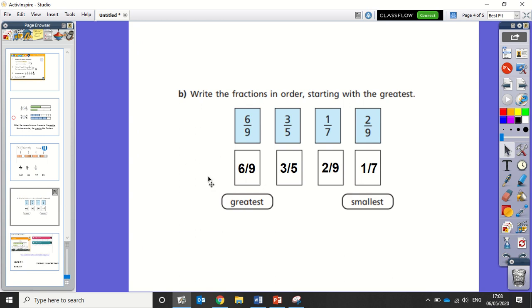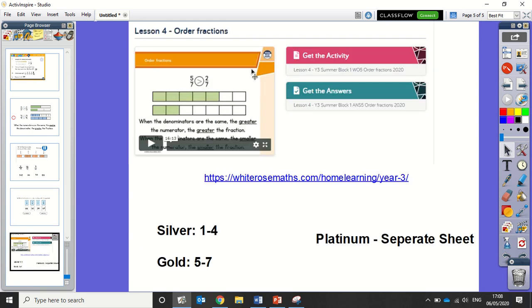Here is the lesson we are on today. It's lesson four, ordering fractions. We send you this document. The link is on screen here. Silver today is questions one to four. Gold is five to seven. And platinum is a separate sheet. Have a good day.